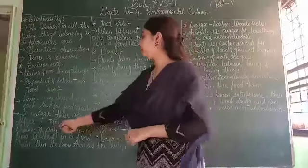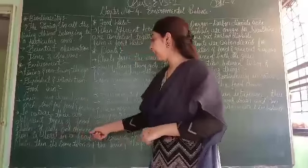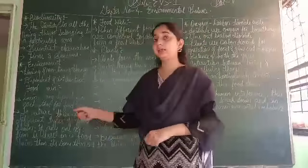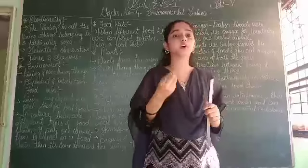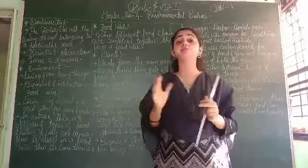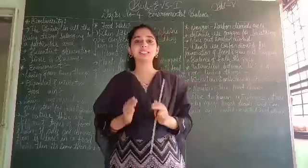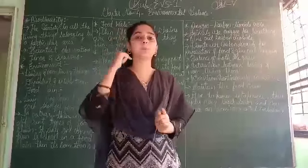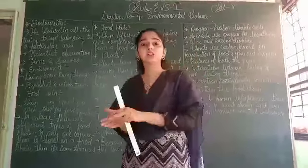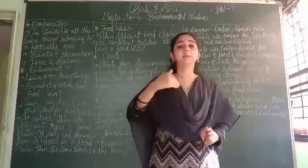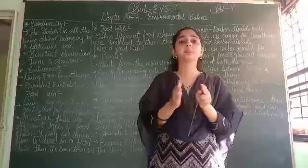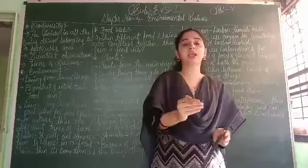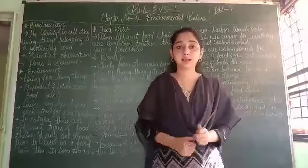In nature, there are different types of food chains. If any connection is lost in a food chain, then it comes to an end. For example, a grasshopper eats grass and a sparrow eats the grasshopper — this is known as a food chain. If this chain breaks down or separates, meaning if the food chain comes to an end, we cannot call it a food chain anymore.